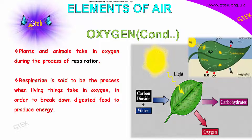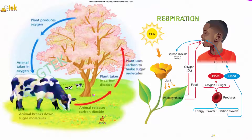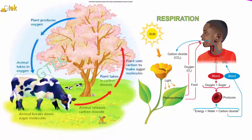You can see here that leaves and plants intake carbon dioxide and water, and with the help of light they produce carbohydrates and oxygen. A plant produces oxygen, the animal takes in oxygen, the animal breaks down sugar molecules, the animal releases carbon dioxide, and the plant takes in carbon dioxide and uses carbon to make sugar molecules to survive. This is the overall process chain of carbon dioxide and oxygen.